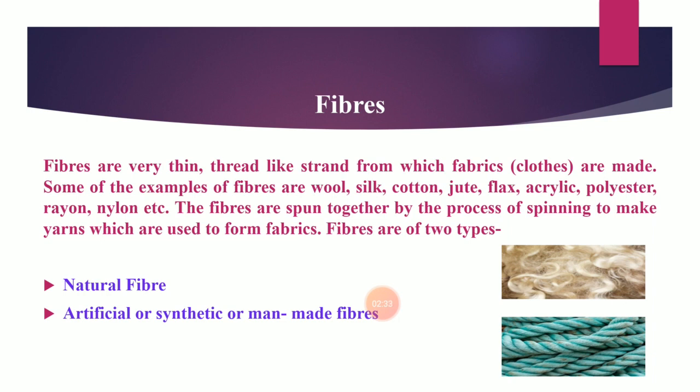The basic thing from which our clothes or fabric are made is fiber. Fibers are the thin, hair-like structures from which we make yarn, and from yarn we make our fabric or clothes. Fibers are thin, thread-like strands — the building blocks of yarn. Examples of fibers are wool, silk, cotton, jute, hemp, flax, nylon, polyester, and acrylic.